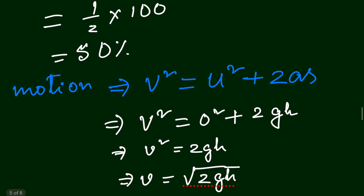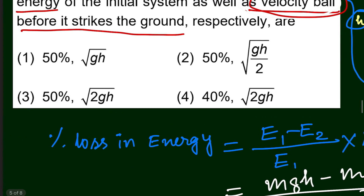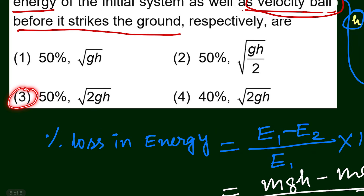Checking the options in the given question: the first answer is 50% loss, and the second is the velocity root over 2gh. So the correct answer is the third option. As a shortcut, imagine the scenario — at the maximum position when the ball is momentarily at rest, kinetic energy is zero and only potential energy exists, at heights h and h/2 respectively. This is how you solve this question.